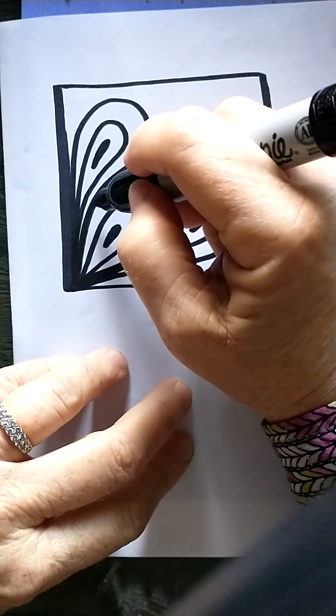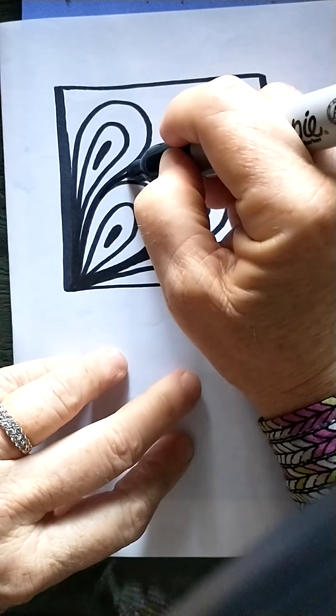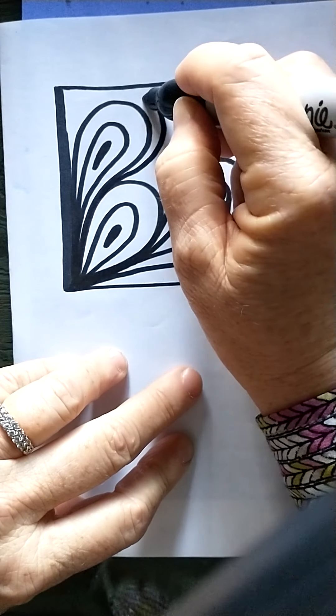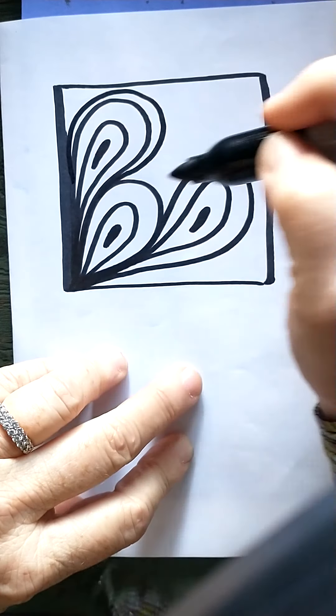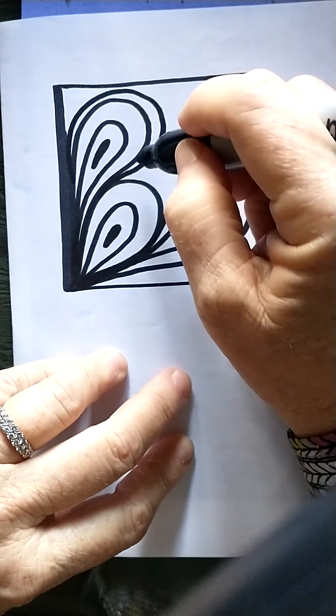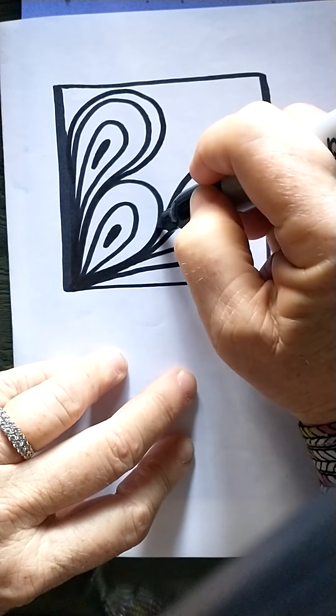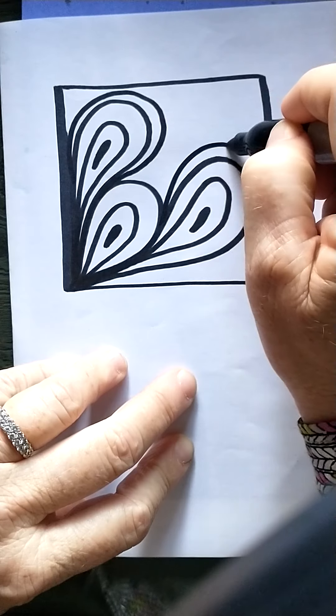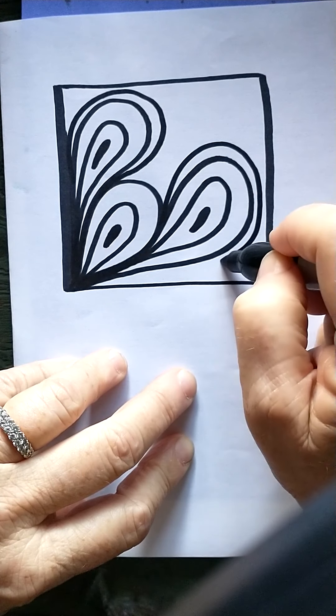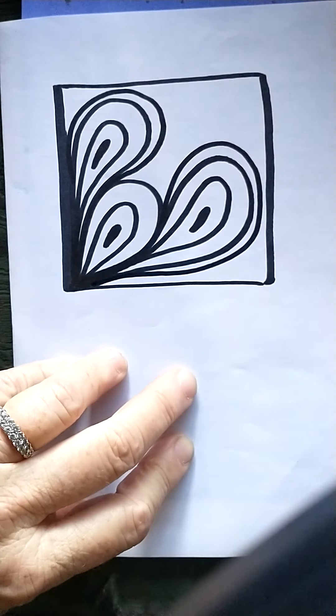Now I'm going to just trace around the shapes I made. I'm going to start with my two outside ones. And I'm coming back in as close as I can.